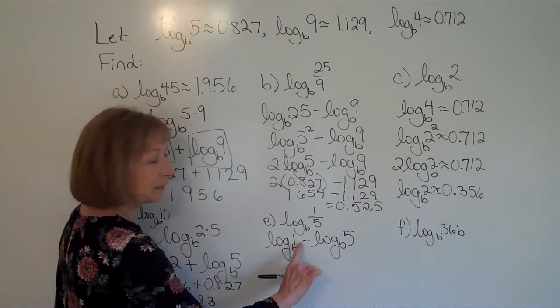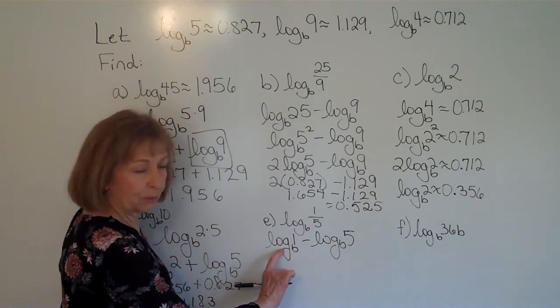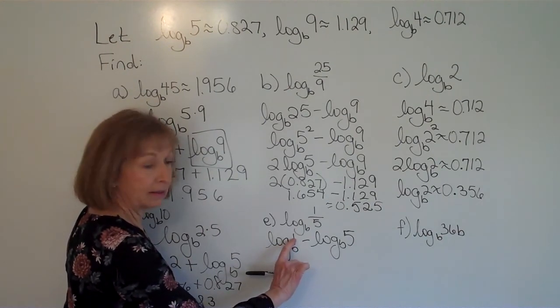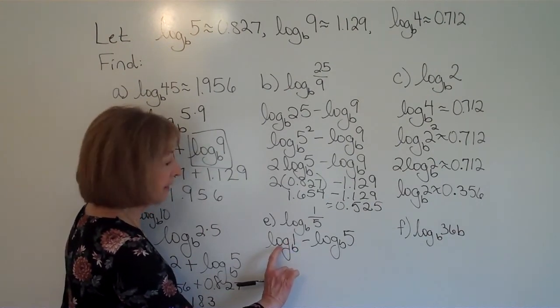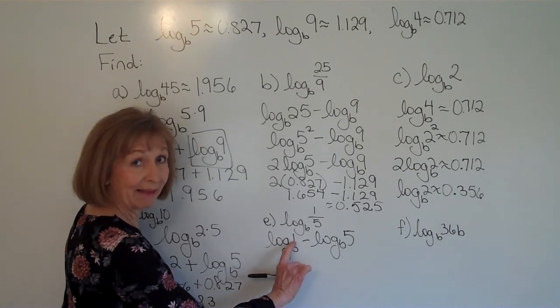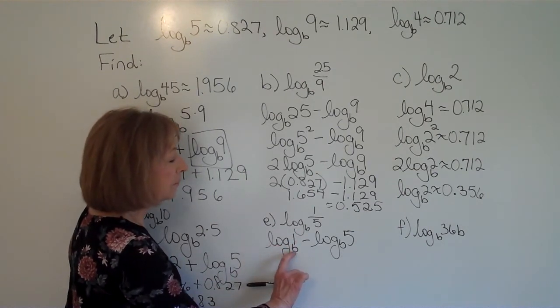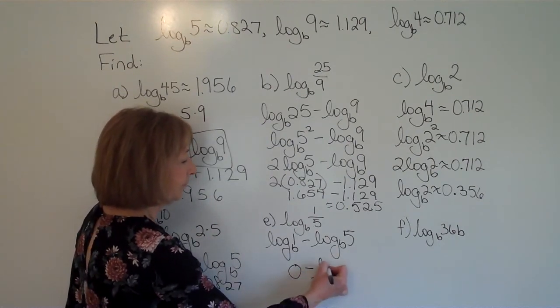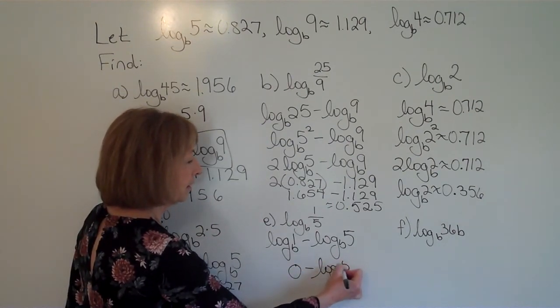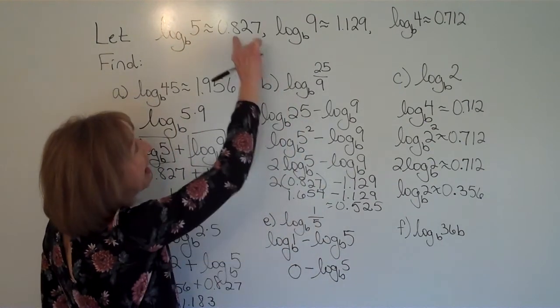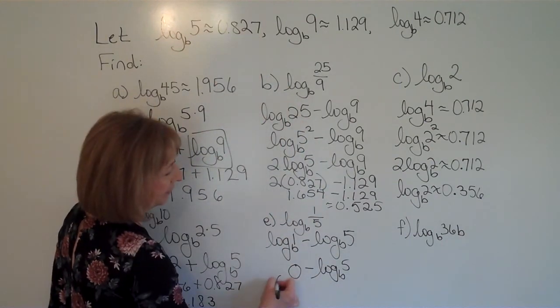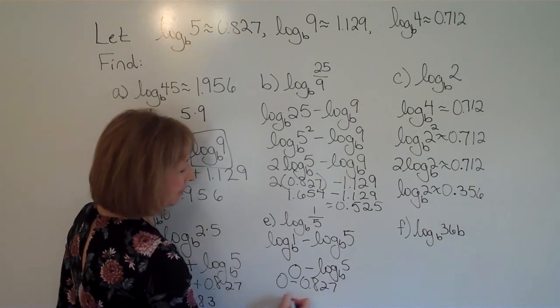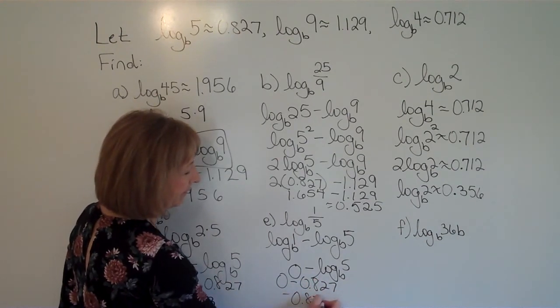Okay, now log base b of 1. Think about it this way. Okay, what exponent would you put on b to get the number 1? Because remember, logarithms are exponents. It's the exponent you'd put on the base to get that value. Well, the exponent I put on b to get 1 is 0. And log base b of 5 I have in my setup. So that's 0 minus 0.827. So I get a negative 0.827.